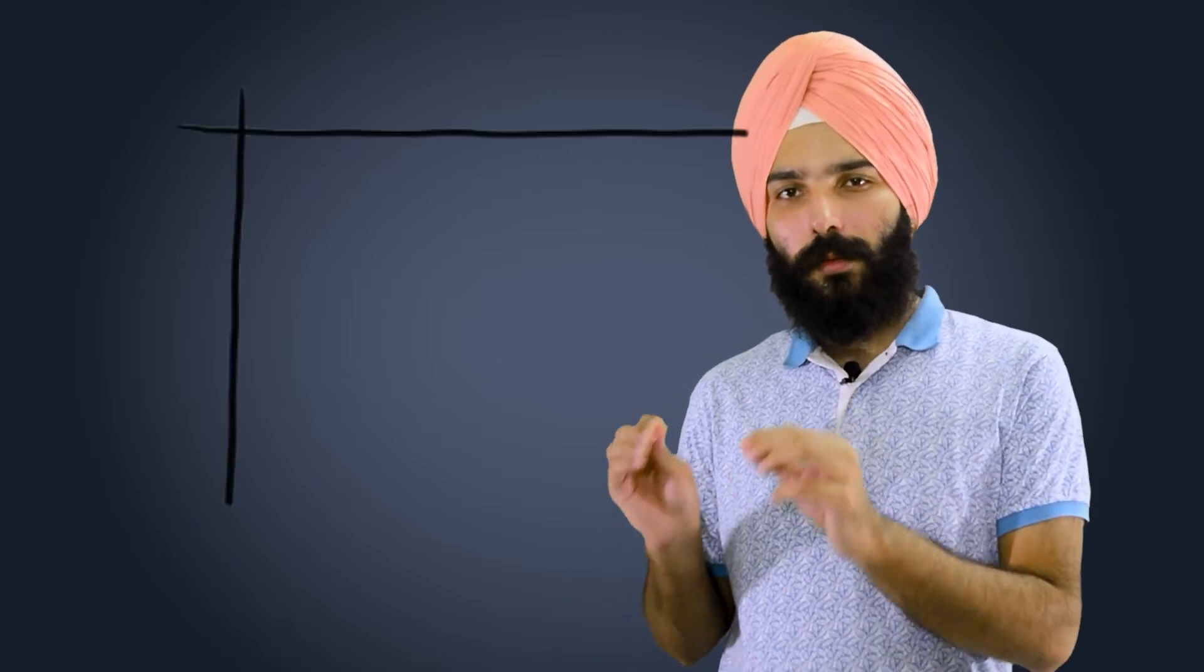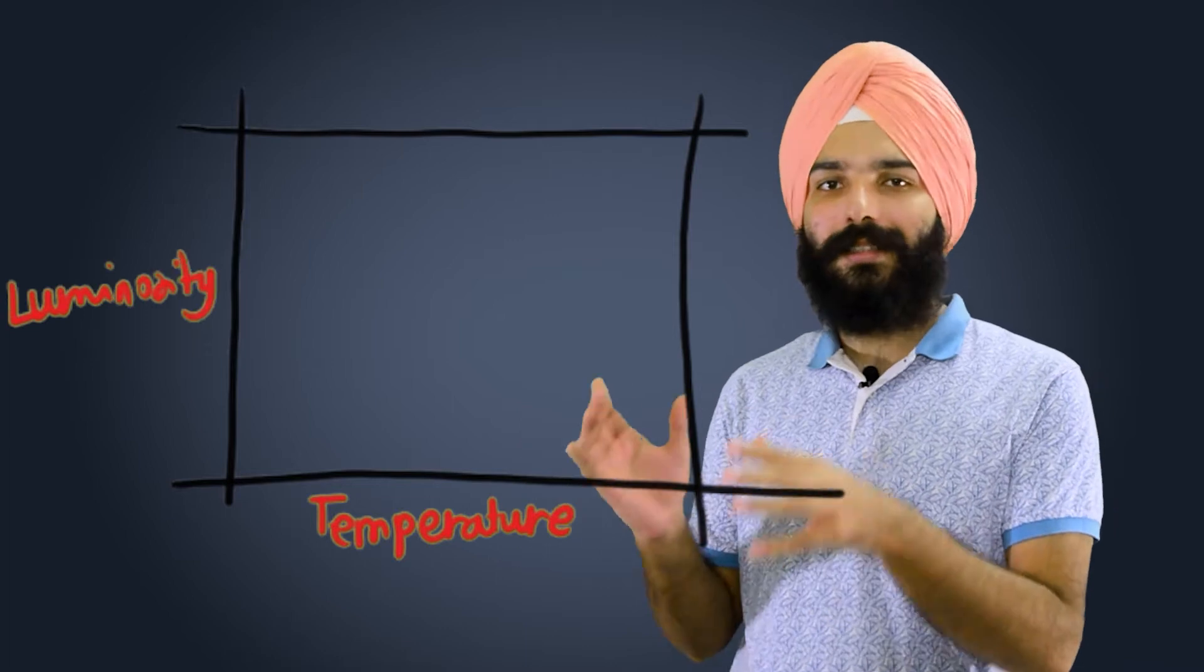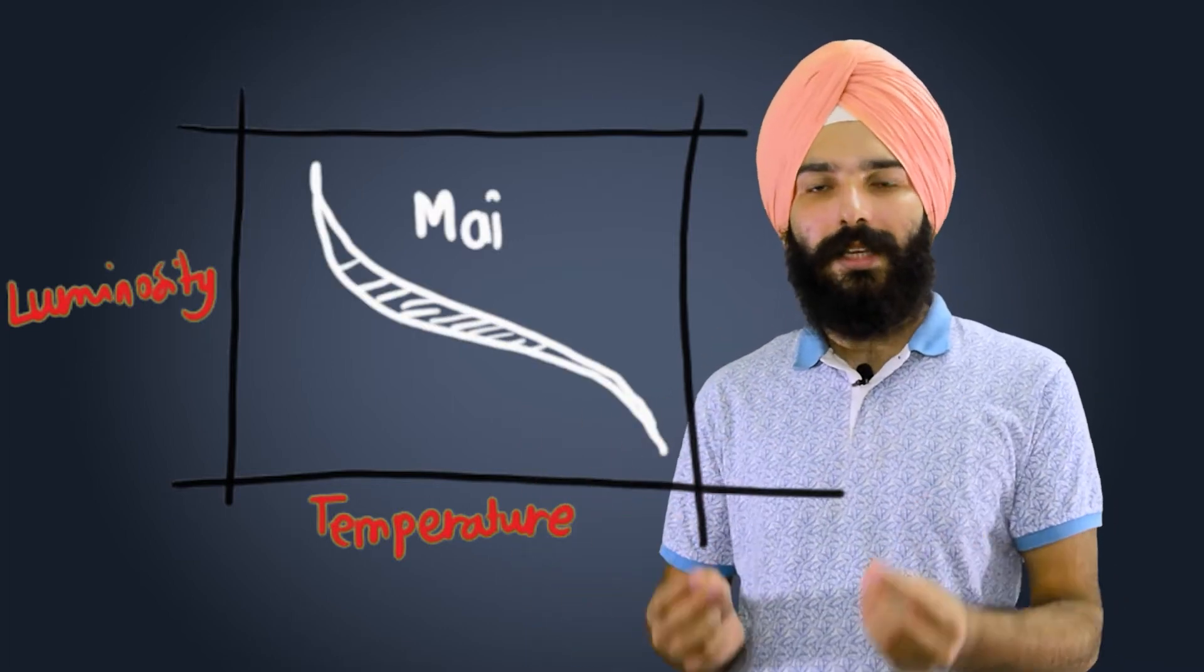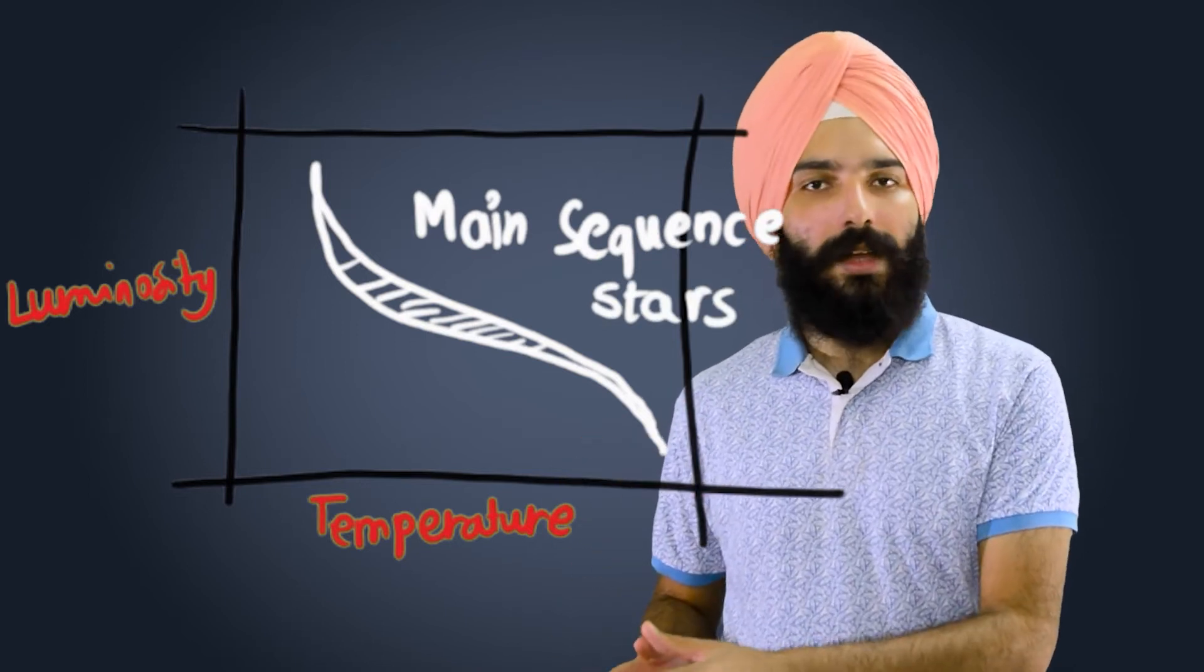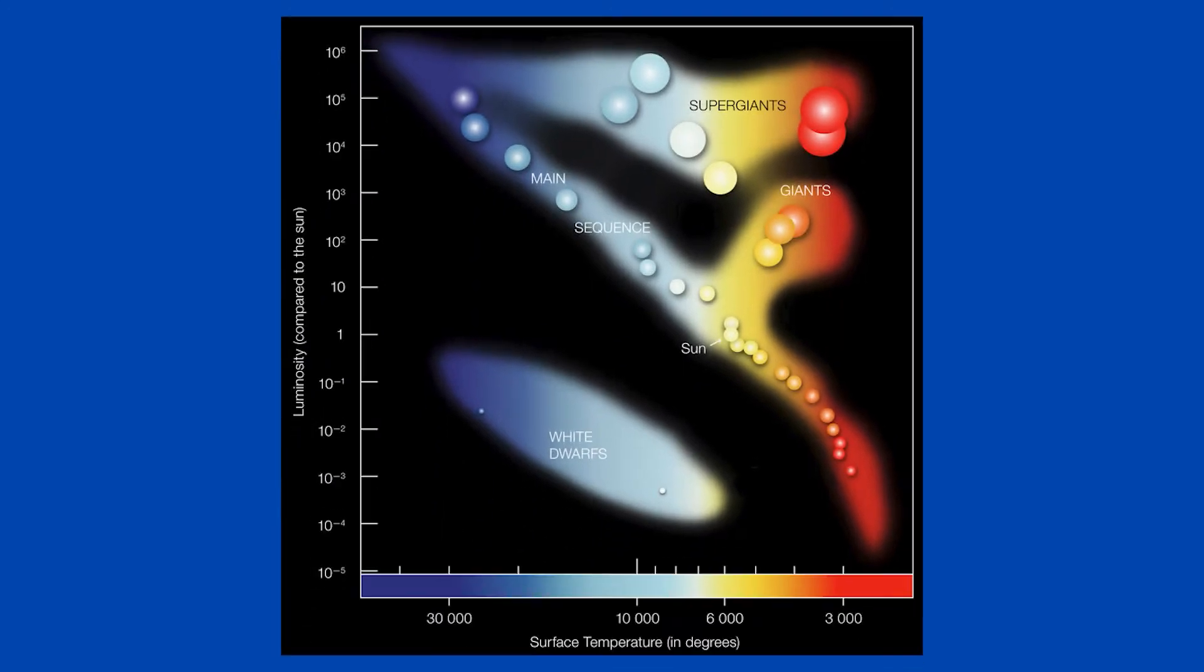But interestingly, you can see that the distribution for most of the stars happens to go around this diagonal line. This line of stars is actually the category of the main sequence stars. And these stars, as you can finally see, are the most abundant of them out there.